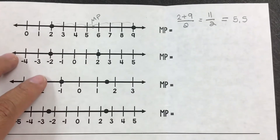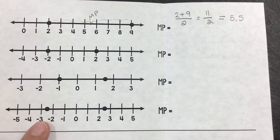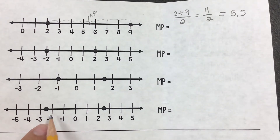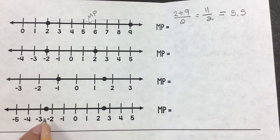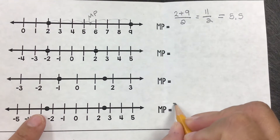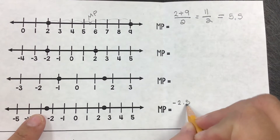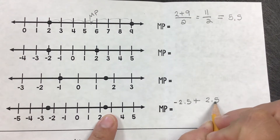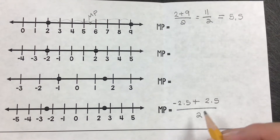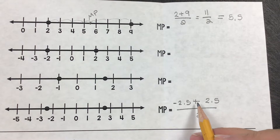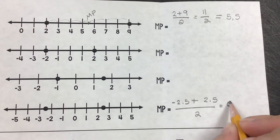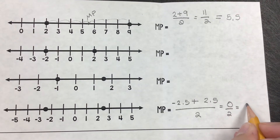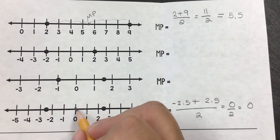To save us a little bit of time I'm going to go to the bottom one. The formula is still the same — we're still going to add those two points together. This point is between negative 2.5 and positive 2.5. So negative 2.5 plus 2.5, still divided by 2. Negative 2.5 plus 2.5 is 0, divided by 2. 0 divided by 2 is equal to 0.